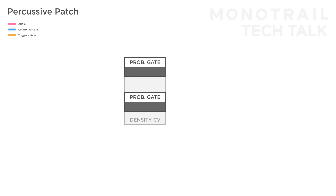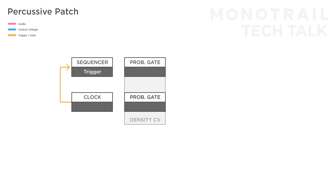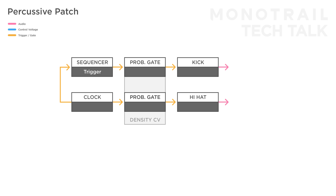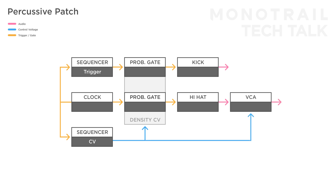You can create step-based probability in combination with a CV sequencer. For example, use a clock to progress a simple 8-step trigger sequencer, and program a pattern triggering the kick on the 1st, 5th and 8th trigger. Then also send the clock output to trigger a hi-hat on every step. When you use the same clock on an 8-step CV sequencer and send that sequence to the density input, you can dial in the probability for each step. For example, set the probability on the 1st and 5th step to 100% so the core beat stays intact, but set other probabilities for the remaining steps. You can also send the hi-hats through a VCA and modulate that with the CV sequence to add some volume modulation over time.